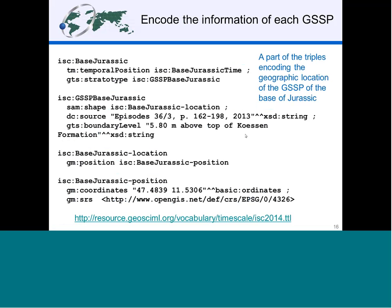Additional triples encode the geographic location of the GSSP of the base of Jurassic. Starting from base Jurassic, it has a stratotype — GSSP base Jurassic — which points to a base Jurassic location, and then to a base Jurassic position with two geographic coordinates. The spatial reference system using EPSG code 4326 indicates these are longitude and latitude coordinates.